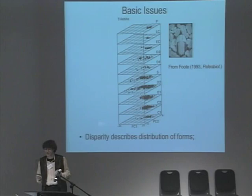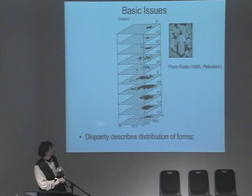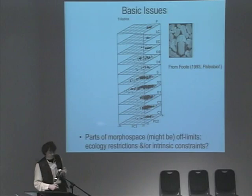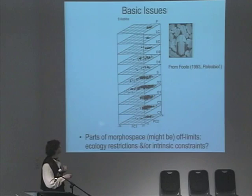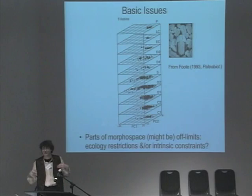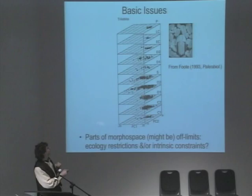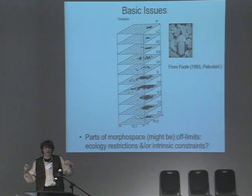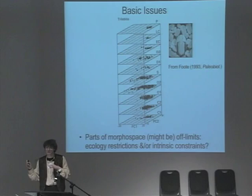Here we have a morphospace by Mike Foote — and Mike has contributed extraordinarily to morphospace and morphologic disparity studies. This shows trilobites over the course of their history, based on principal components analyses of morphometric data. Disparity is a concept for describing the range of forms and their distributions. Another issue that comes up is constraints and ecologic restrictions — you can see parts of trilobite morphospace that seem off limits, and parts that were occupied at some times but not others. Why didn't they ever get back there? This relates to both ecologic restrictions, a souped-up version of Darwin's Finches model, and intrinsic constraints — which are not contradictory.